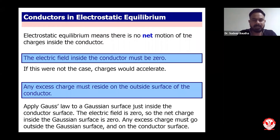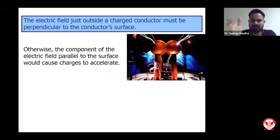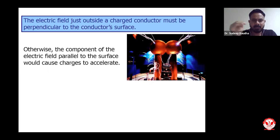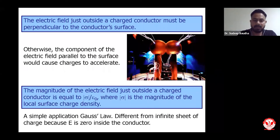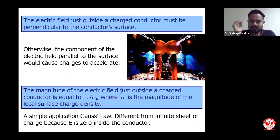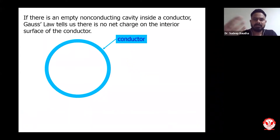Apply Gauss Law to a Gaussian surface just inside the conductor surface. The electric field is zero, so the net charge inside the Gaussian surface is zero. Any external charge must go outside the Gaussian surface and on the conductor surface — that is what our standard electrostatic equilibrium says. The electric field just outside a charged conductor must be perpendicular to the conductor surface; otherwise, the component of the electric field parallel to the surface would cause charges to accelerate.